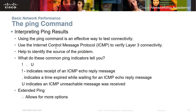When we use the ping command on the Windows side, it's a little bit different than when we're using Cisco devices. The ping command is an effective way to test connectivity after you've set up IP addressing, to make sure everything is connected properly and working. It uses ICMP — the Internet Control Message Protocol — to verify Layer 3 connectivity. That's what ping does for you.